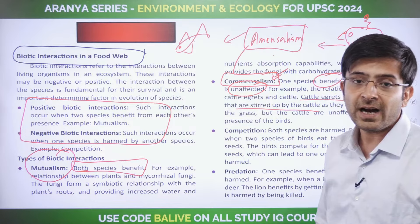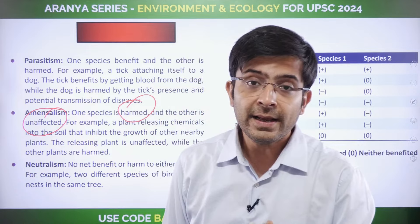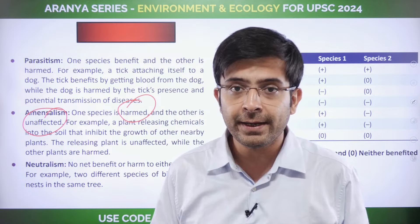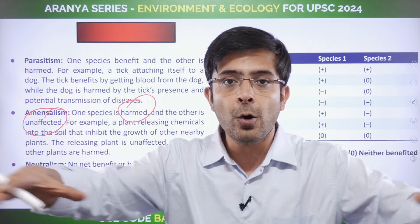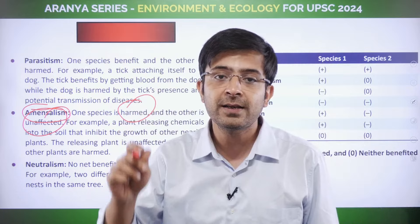Amensalism is to be remembered alongside commensalism. In amensalism, one organism is harmed and the other is unaffected. For example, certain plants release secretions in the soil to prevent other plant growth around them — killing competition. The secreting plant does not affect itself, but it harms all other plant growth around it. Commensalism is positive; amensalism is negative.